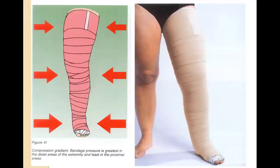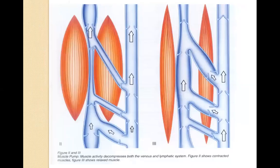Compression wrapping uses short-stretch bandages — 100% cotton with no added elasticity, stretching only slightly due to fabric weave — not standard ace bandages. They are applied distal to proximal in an ascending fashion with more layers distally than proximally, creating a positive pressure gradient highest distally and lowest proximally. Combined with exercises and muscle pumping, the muscles pump on both venous and lymphatic structures, making range-of-motion exercises very important to promote both vascular and lymphatic return.